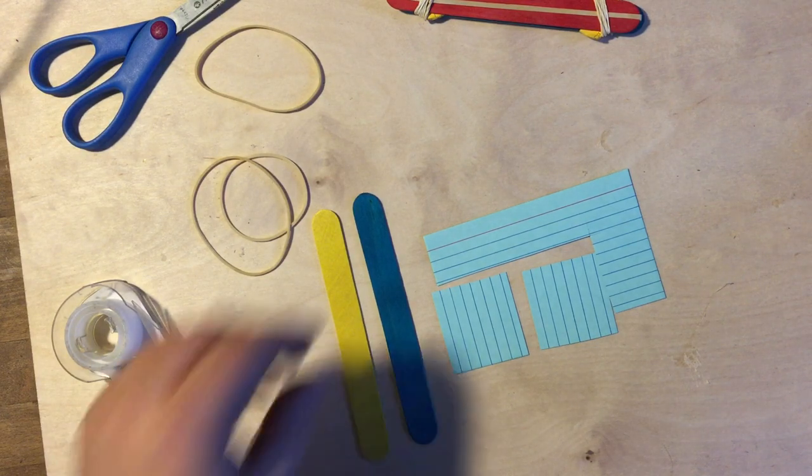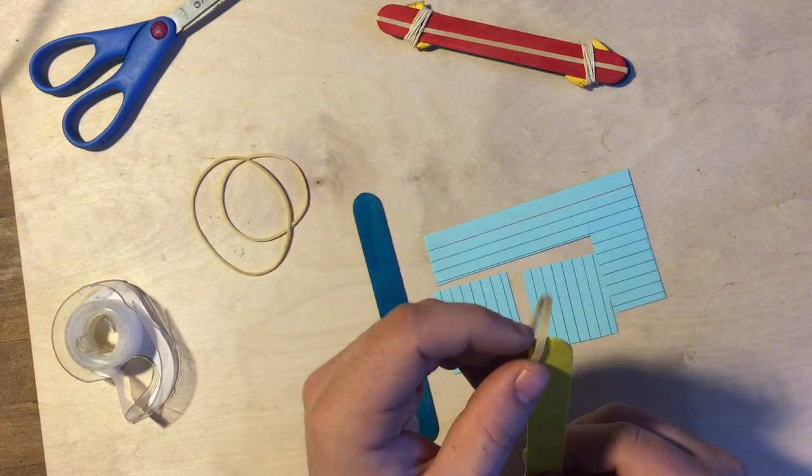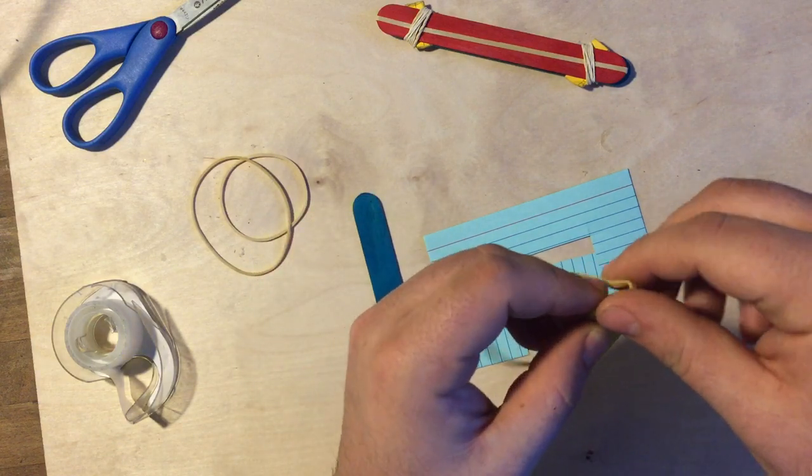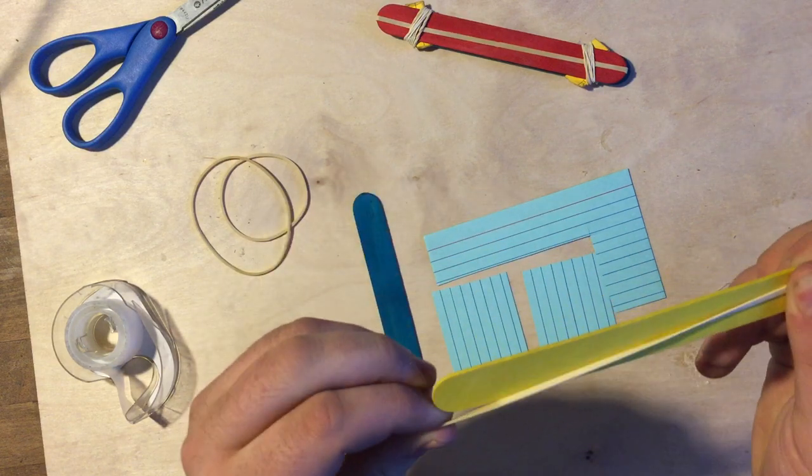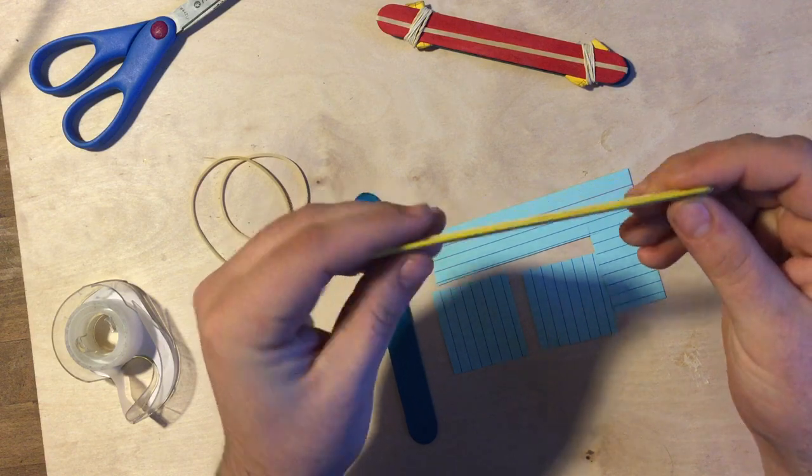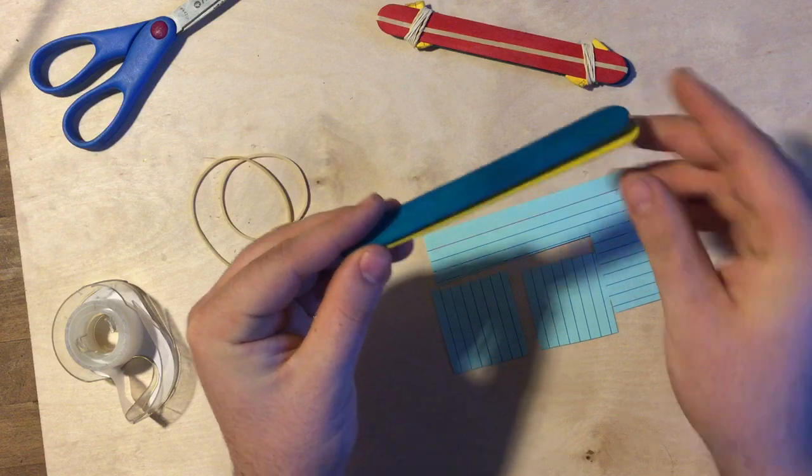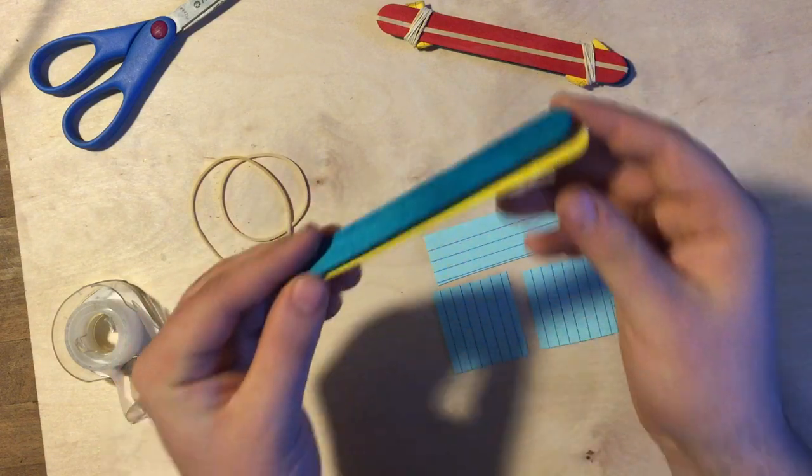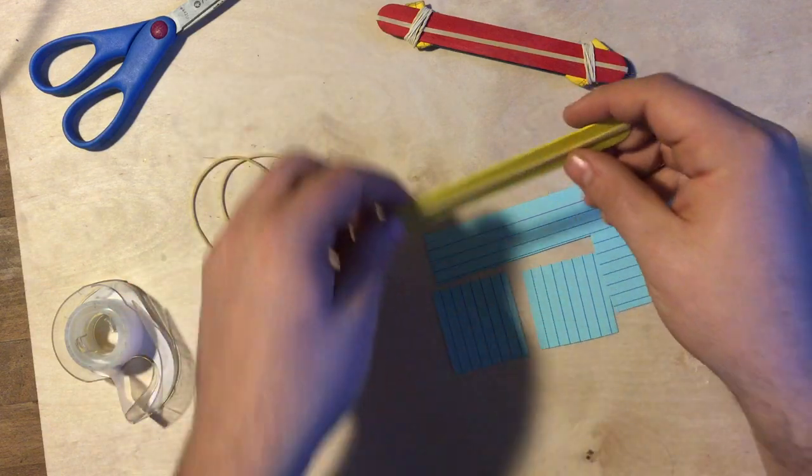To get started let me take one of my Popsicle Sticks and my thickest rubber band. I'm going to stretch it vertically along the Popsicle Stick so it stays there just like this. This rubber band is going to get sandwiched in between the other rubber bands and by blowing through here we're going to be able to create those vibrations and create that sound. That's my first step.